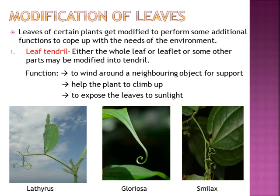The functions of tendrils, which are generally asked in examinations: they wind around neighboring objects for support, so the plant does not always creep on the ground. They help the plant climb up — as you have seen in money plants, how they wind around support. They also expose the leaves to sunlight from all directions, which would not happen if the plant were lying on the ground.